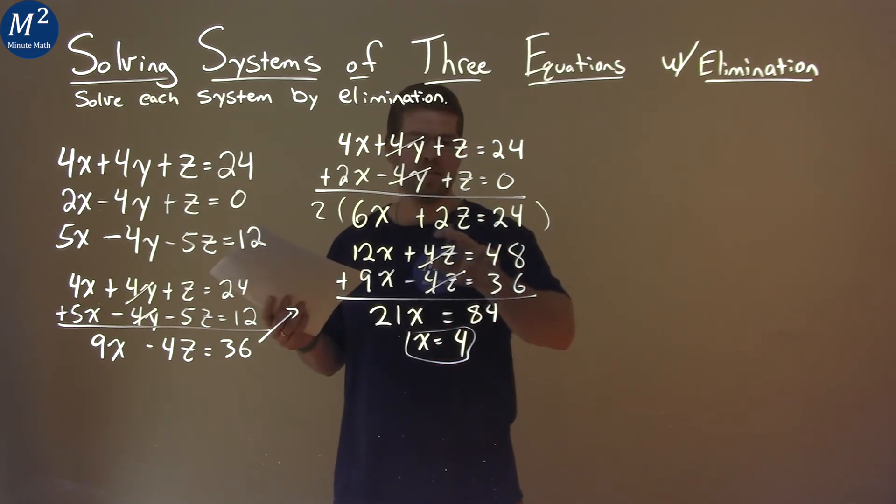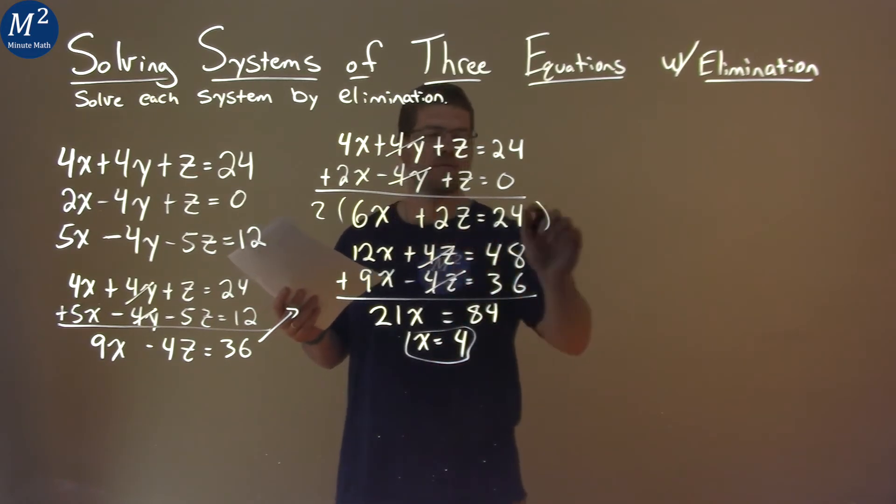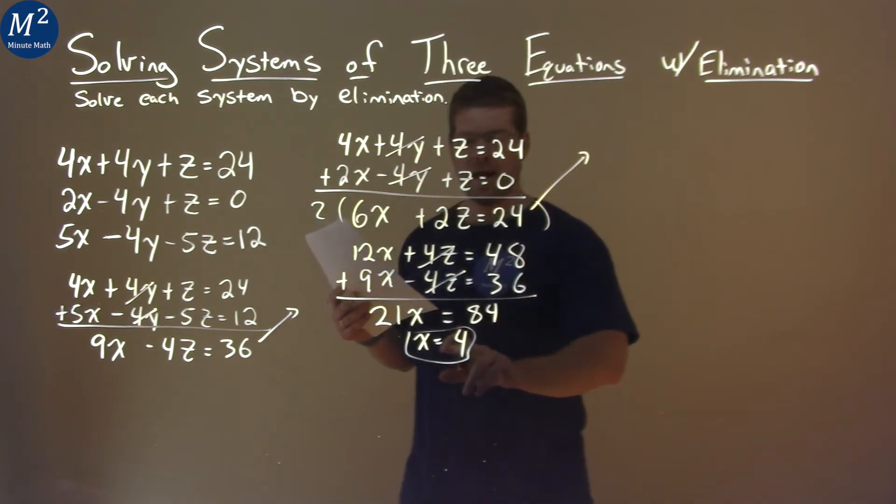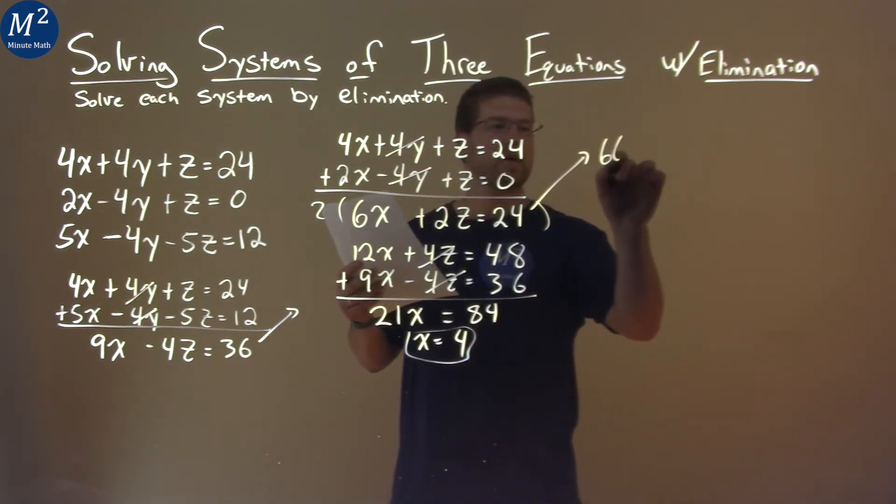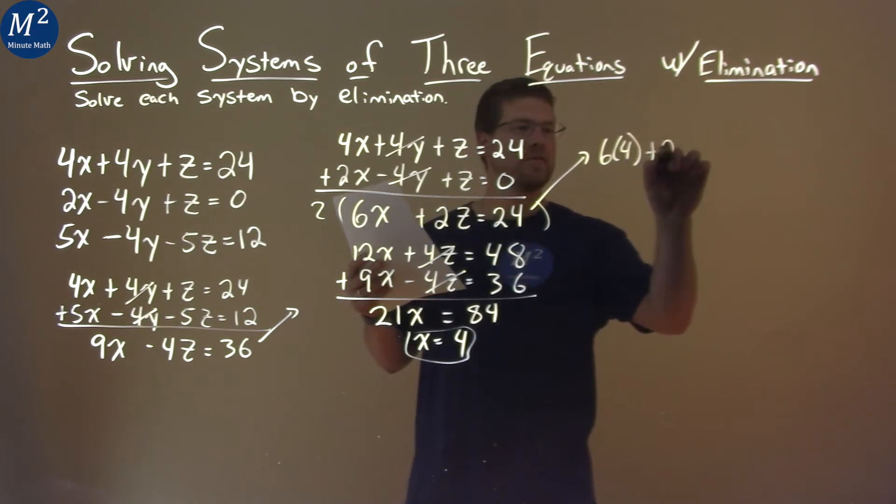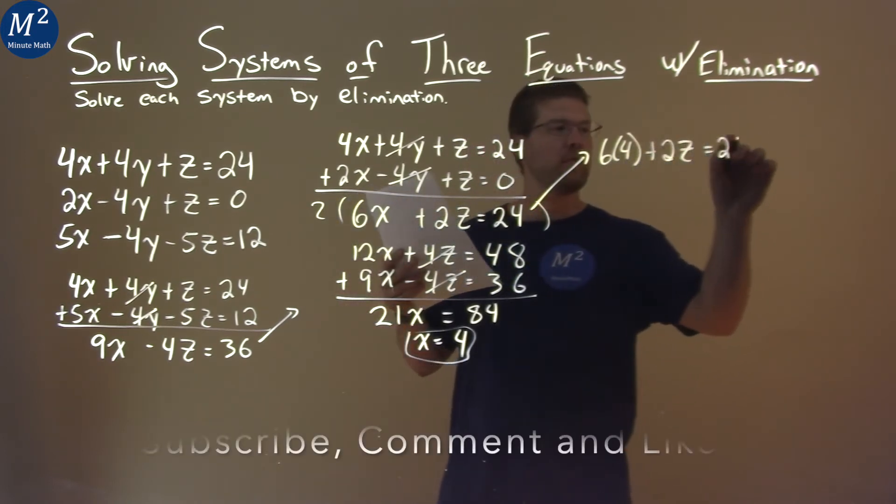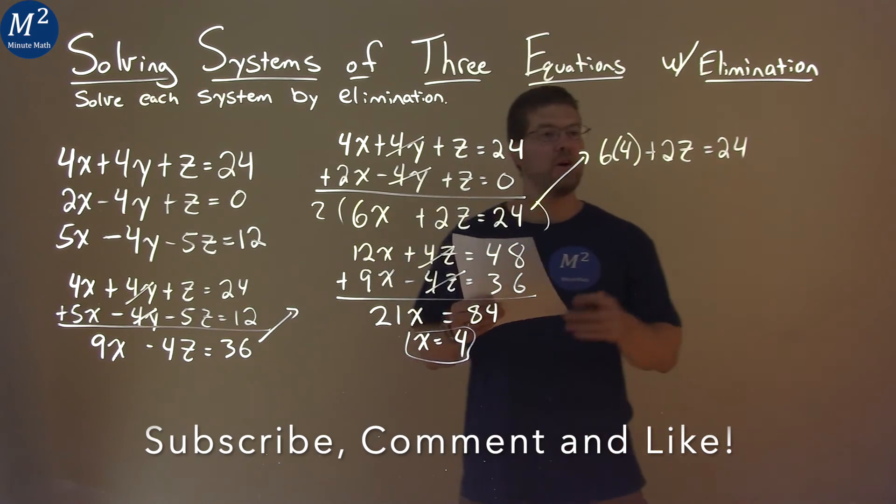Divide both sides by 21, and x equals just positive 4. So all that work just to get one variable. Well, where can we go from here? We want to take an equation that's kind of easy to work with and we can plug a 4 in to get another variable out. And I see this one here, 6x plus 2z equals 24. So I'm going to rewrite that up here and we're going to put x in for 4. We have 6 times 4 plus 2z equals 24.